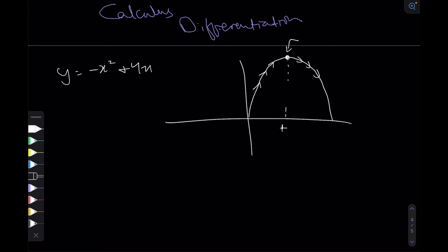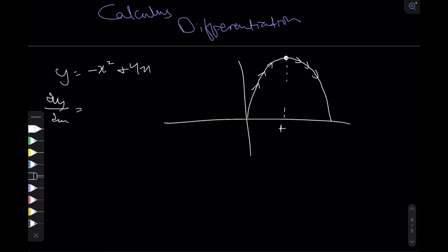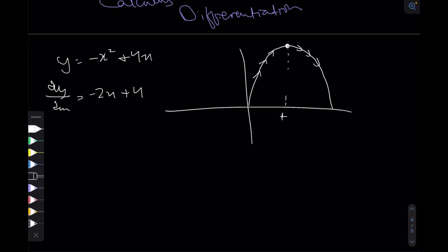This point is called a turning point or a vertex, and it is given this name because before it the function is increasing and after it the function is decreasing, or vice versa. So how do we compute this? Well, if we differentiate this, we know that the differential gives the gradient at any point — so dy/dx equals minus 2x plus 4. Notice that at the turning point the gradient would be 0.